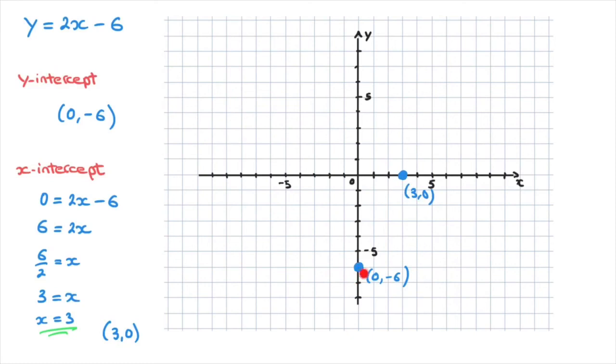We now have both points plotted on the xy grid. And now all we need to do is, with a ruler, draw the line that passes through these two points. And doing so would look something like this. There we go. And in fact, I'll label that line y equals 2x minus 6. And that's how we can draw a line given its equation.